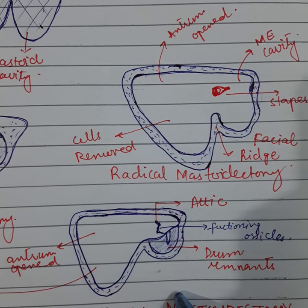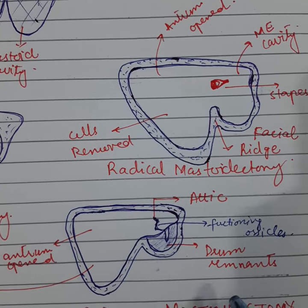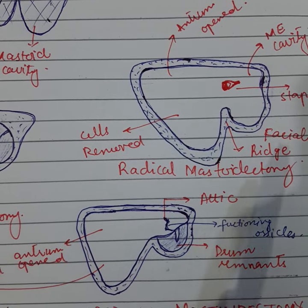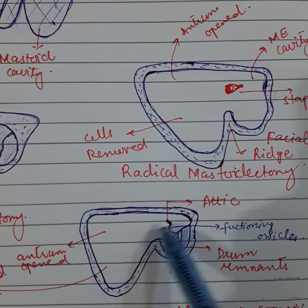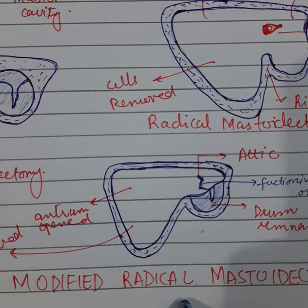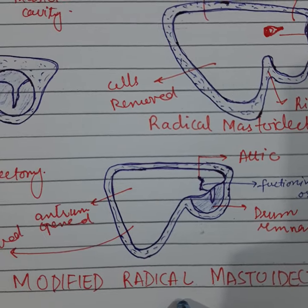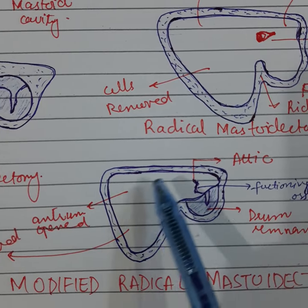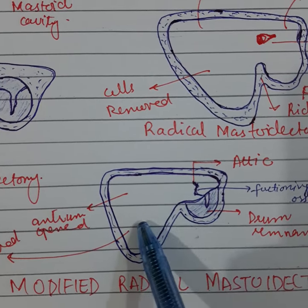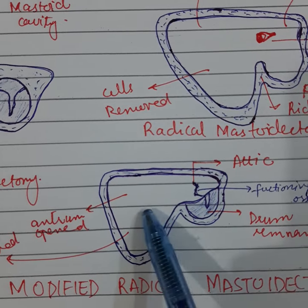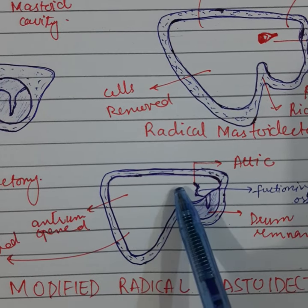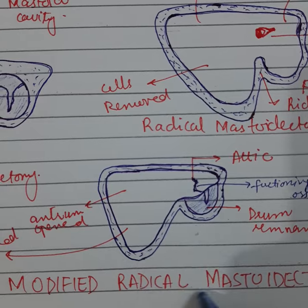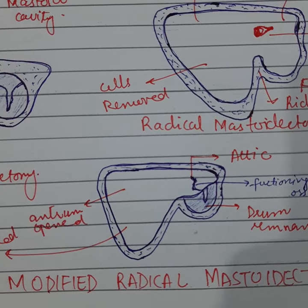Hearing is mostly preserved and there is no obliteration of the eustachian tube. As hearing is preserved, it is done when the cholesteatoma is confined to the attic and antrum part only, and in localized chronic otitis media. Modified radical mastoidectomy is more commonly done than the radical mastoidectomy.